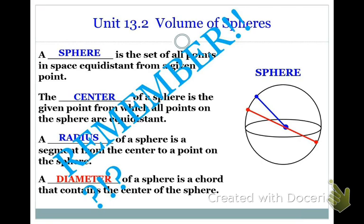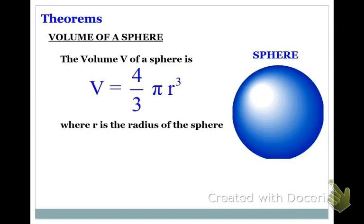Or it's a distance through the center between two points on the sphere. So radius and diameter are going to be big for us when we're coming up with the volume of a sphere or a hemisphere.